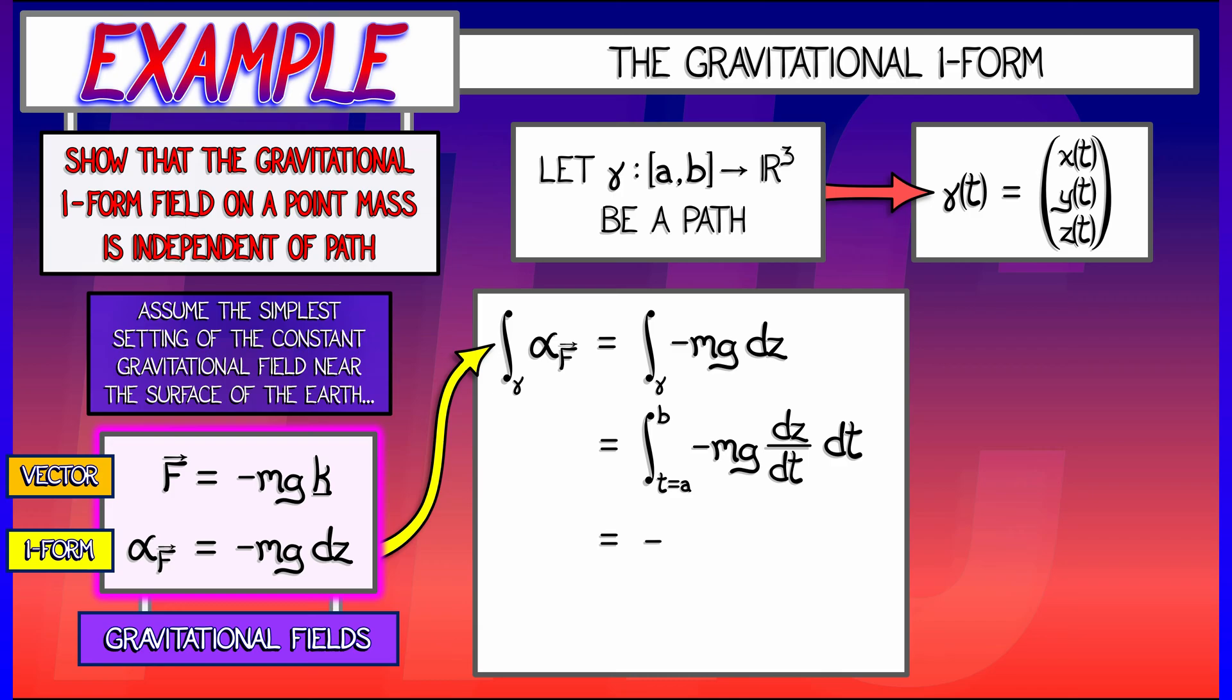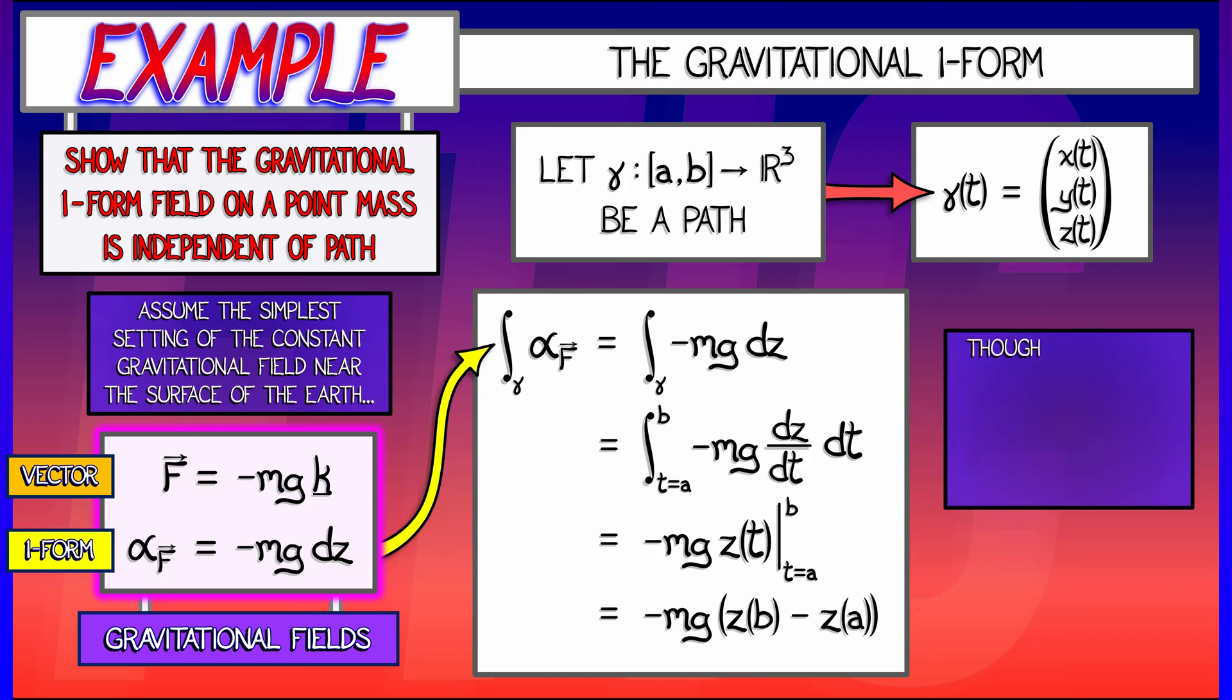Now, of course, this is a simple integral. The minus mg comes out, and we're left with z of t as t goes from a to b, giving us a final answer of minus mg times the change in the z-coordinate, z of b minus z of a.